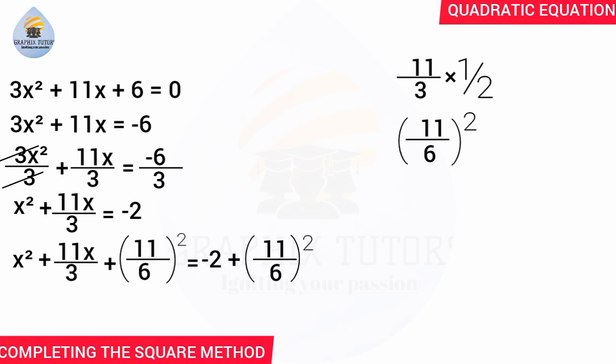Now, x squared plus 11 over 3 times x plus (11 over 6) squared is a perfect square. So we write it as a squared binomial — taking x and 11 over 6, we get (x plus 11 over 6) squared.